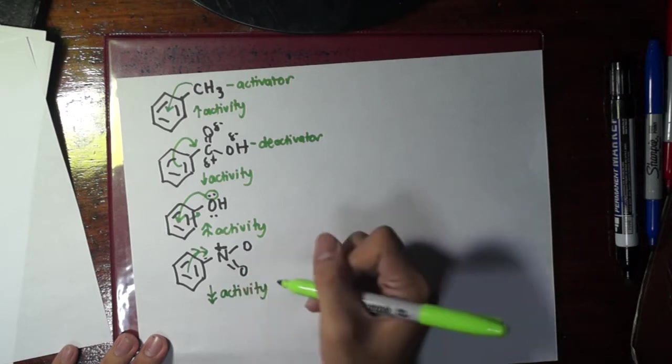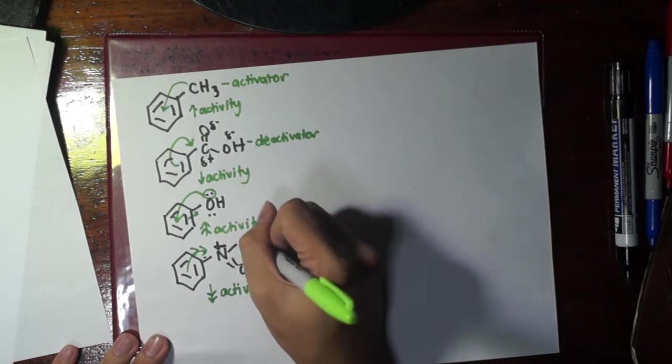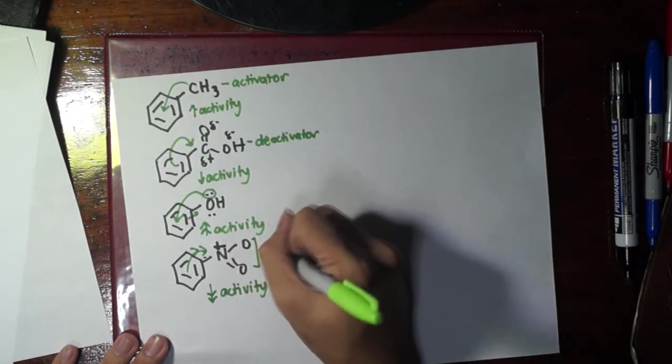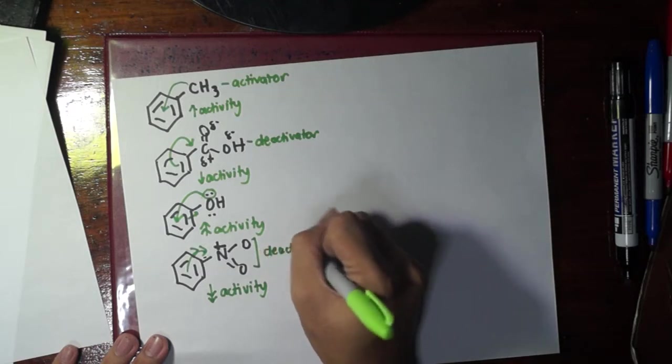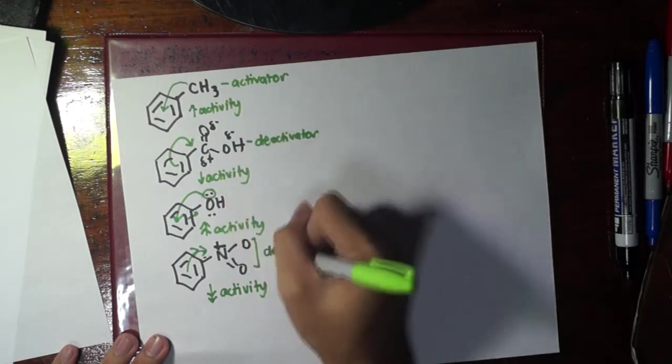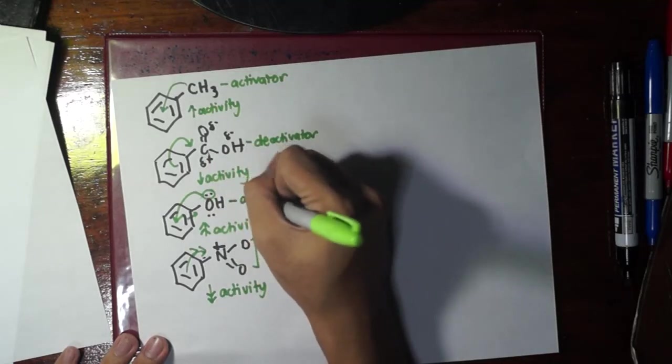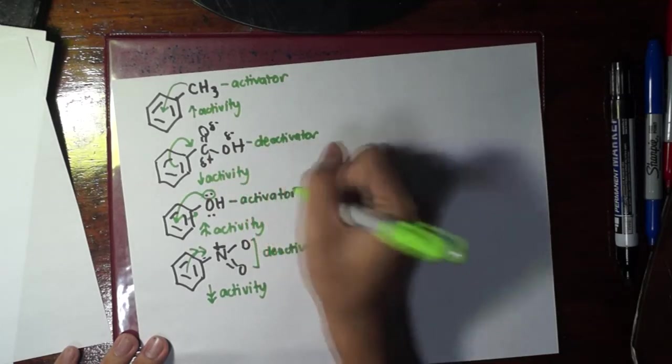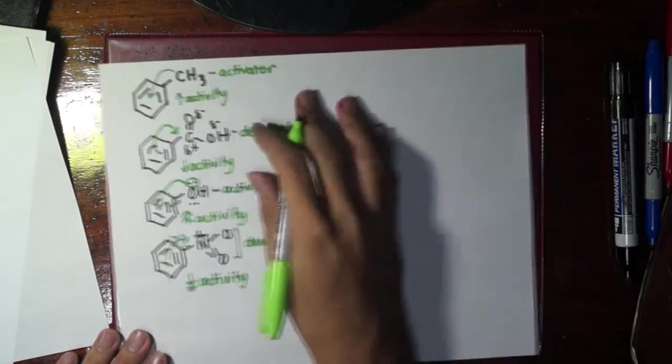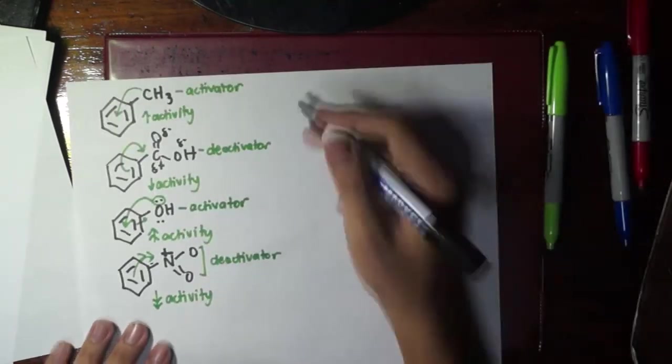So it decreases the activity of the ring so much, meaning actually the nitro group is the strongest deactivator. So again, this and this is a deactivator, this OH or this hydroxyl group is an activator. So I hope you get the point. That's it for activation or deactivation.